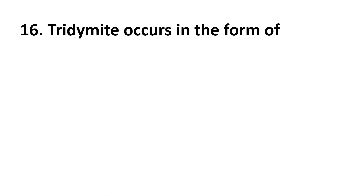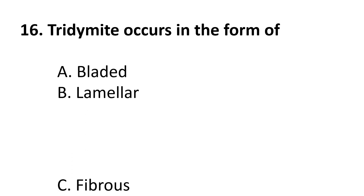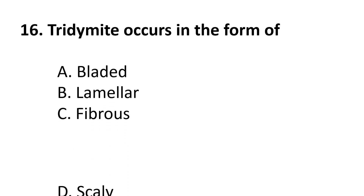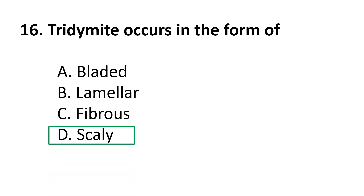Question 16: Tridymite occurs in the form of — A. bladed, B. lamellar, C. fibrous, D. scaly. The correct answer is D, scaly.